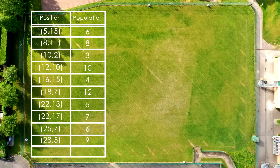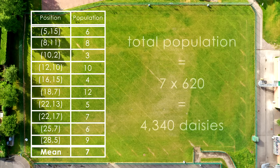Here are my results. What I then need to do is find a mean average of daisies per meter squared. For me, this is seven daisies per meter squared. To estimate the total population, I just need to multiply this number by the total number of meter squared in the field, 620. This gives me 4340 daisies.